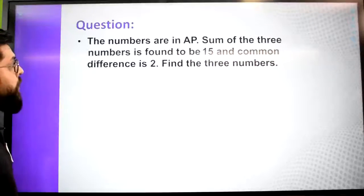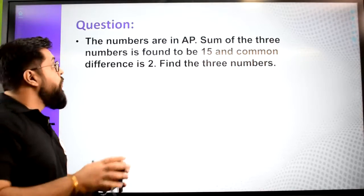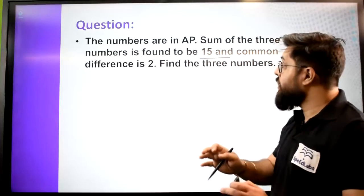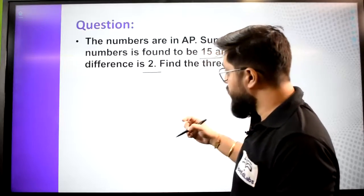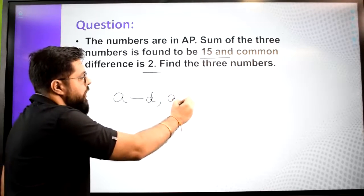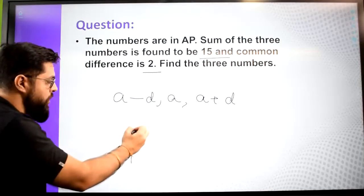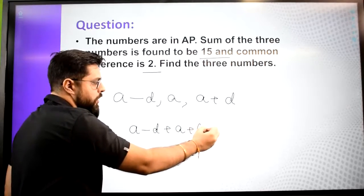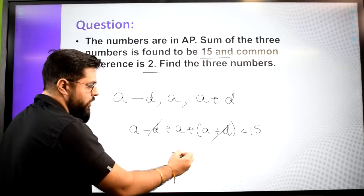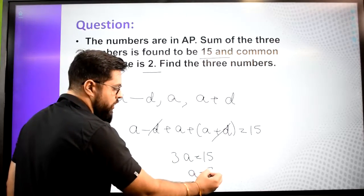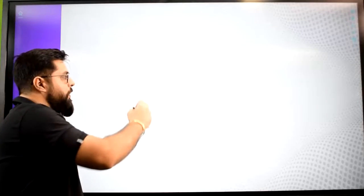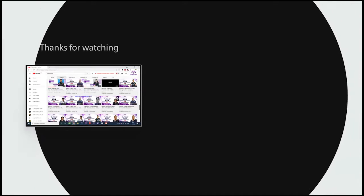Now let's do a question. Three numbers are in AP, the sum of the three numbers is 15, and the common difference is 2. Find the three numbers. We take the three terms as a minus d, a, and a plus d. Their sum is: a minus d plus a plus a plus d equals 15. The plus d and minus d cancel, giving 3a equals 15, so a equals 5. The common difference is given as 2, so our three terms are a minus d, a, and a plus d, which gives 3, 5, and 7.